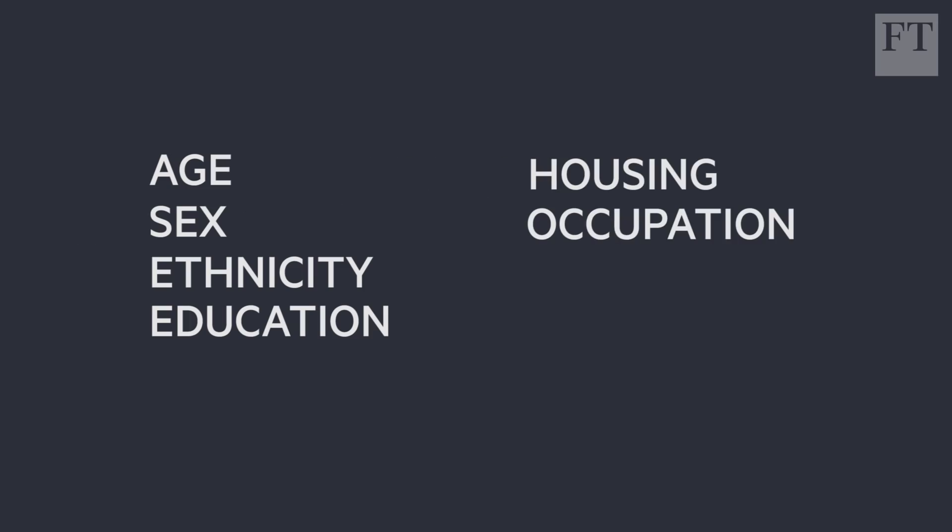Step two: don't just ask them who they're voting for, but who they are — age, sex, ethnicity, education level, housing, occupation, how they voted in the EU referendum. You'll also have gathered lots of local information about their constituency, from which parties have historically done well or poorly there, to what's happened to house prices. So you have data at the individual level, but also the context of the wider geographical area. That's why it's called multi-level.